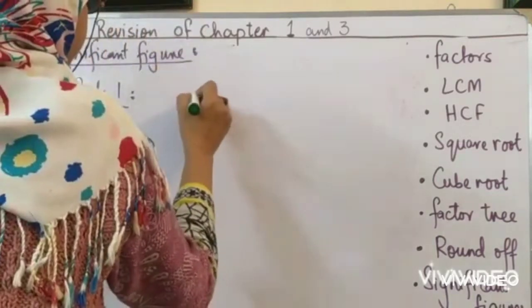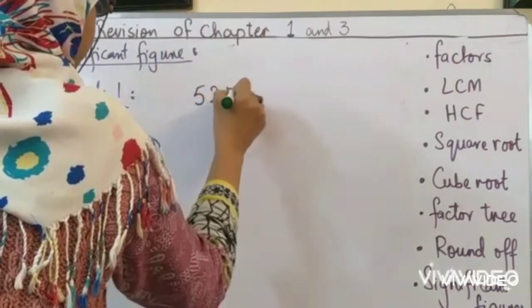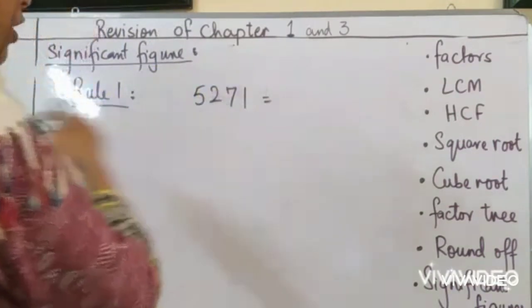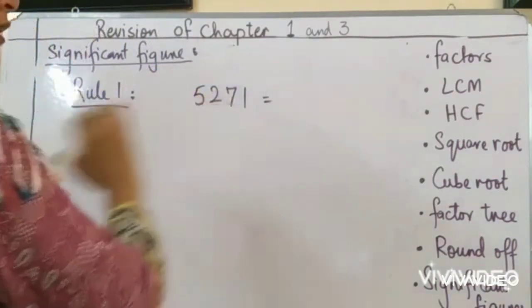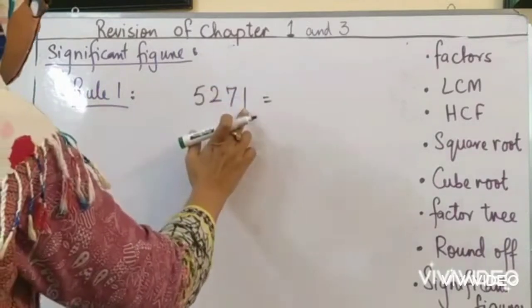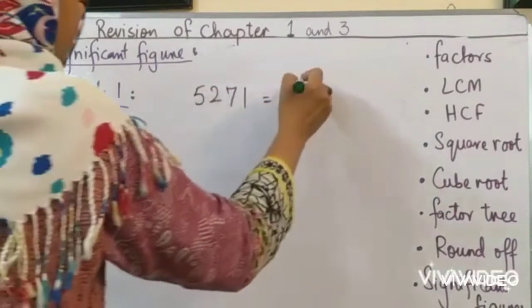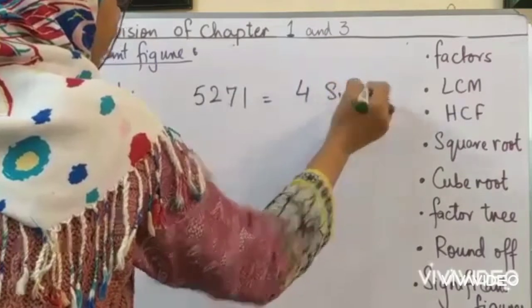Let's see an example. 5, 2, 7, 1. All non-zero numbers, they are all significant numbers. How many? 1, 2, 3, 4. Four significant figures.